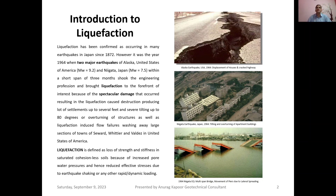The first image shows the Alaska earthquake, USA, 1964, where displacement of houses occurred and roads and highways cracked. The second image of the Niigata earthquake, Japan, 1964, shows how apartment buildings tilted and overturned due to earthquake-induced liquefaction. A third picture from the 1964 Niigata earthquake shows a multi-span bridge failure caused by movement of piers due to lateral spreading from earthquake-induced liquefaction.